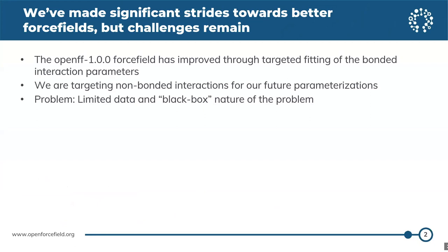I'm going to focus today on the van der Waals, commonly modeled with the Lennard-Jones model, but we hope to use this kind of analysis for electrostatics in the future. The problem with Lennard-Jones fitting is that, one, there's limited data — instead of training against quantum calculations, we have to train against macroscopic observables, so we're really limited to what experiments people have actually done.